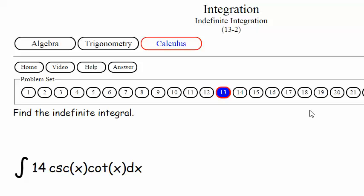Let's look at my notes. Alright, we have the integral. Let's write it down, 14 cosecant X, cotan X, DX.